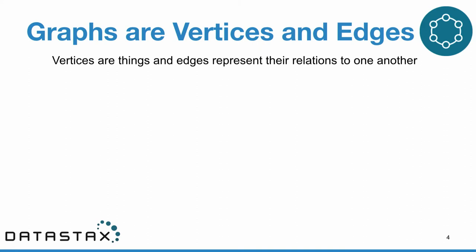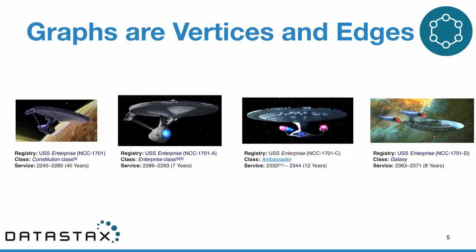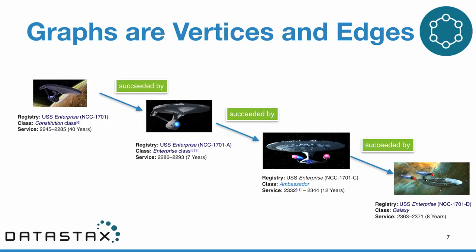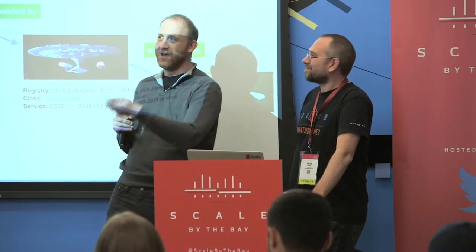For anyone who hasn't seen graphs before: graphs are just a group of things we call vertices and edges. Vertices refer to some kind of object — for example, these spaceships — and they have properties, various attributes. Then we have relationships between them, which we call edges. Here we've got edges connecting spaceships showing that the first USS Enterprise was succeeded by the second, then another, and another, all with their own call signs.